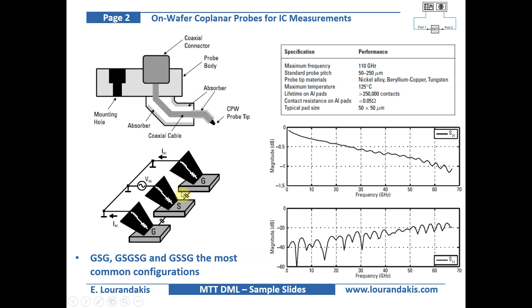In a typical ground signal ground configuration, also called GSG configuration, the AC signal is applied to the signal pad and the coplanar ground pads provide the current return path for this excitation scheme.